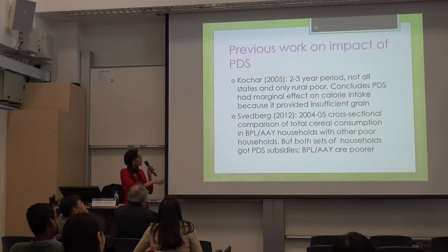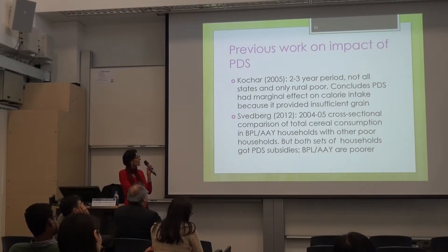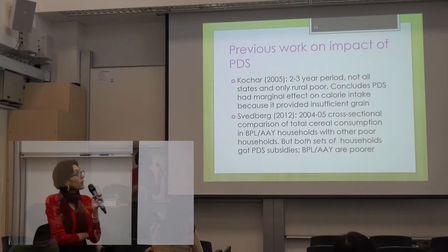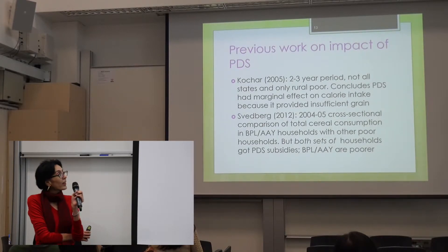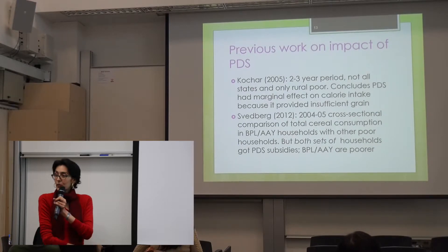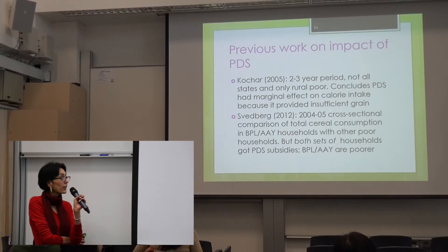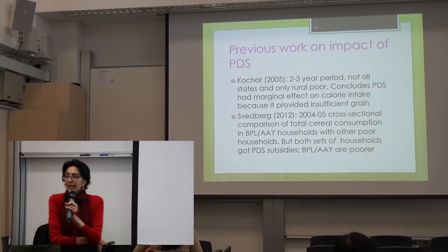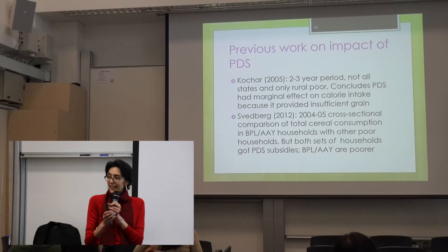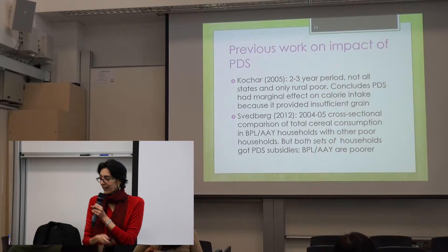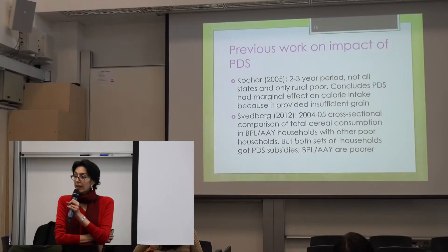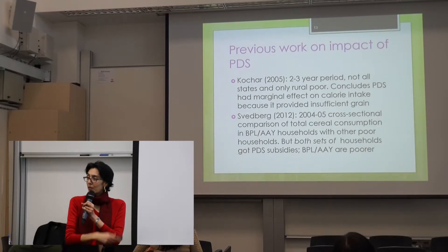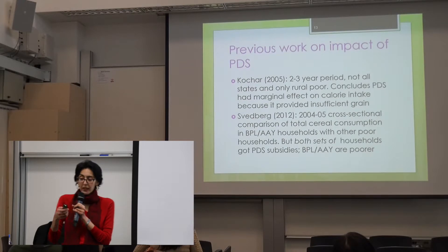There's another more recent study by Svedberg in 2012, but this is a bit flawed. It's a cross-sectional analysis using data from 2004-05, comparing households with BPL/AAY cards to other poor households. Unfortunately, as this data shows, both sets of households actually received PDS subsidies. The targeting is imperfect and you cannot therefore run a cross-sectional comparison like this. Also, the data shows that BPL/AAY households tend to be poorer than even the normal poor households.